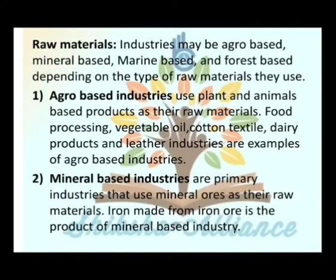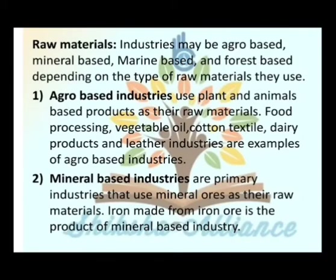Agro-based industries use plant and animal-based products as their raw materials. Examples of agro-based industries include food processing, vegetable oil, cotton textile, dairy products, and leather industries.